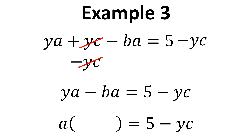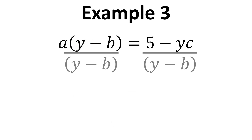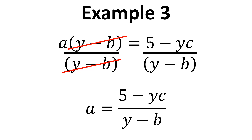We're now going to factorise the left hand side, putting A outside the brackets and two terms inside such that multiplying back out returns what we had before. The next step is to divide both sides by Y minus B so that cancels on the left hand side, and we're left with A equals 5 minus YC divided by Y minus B.